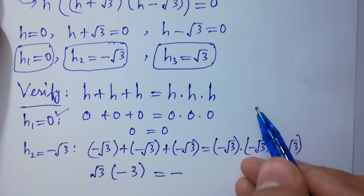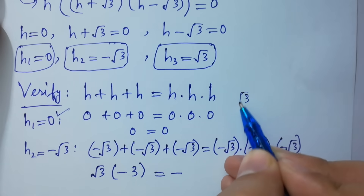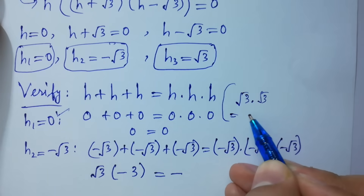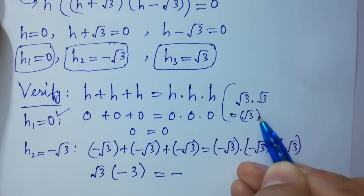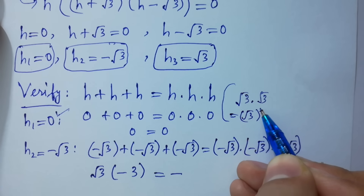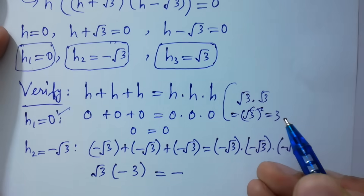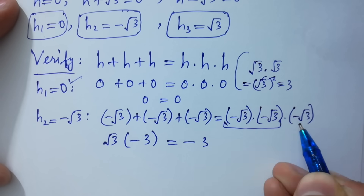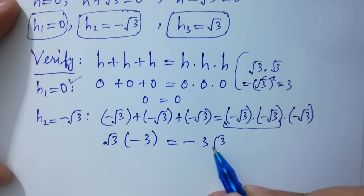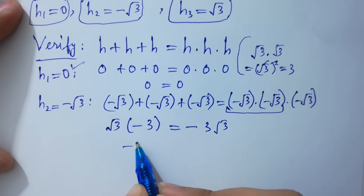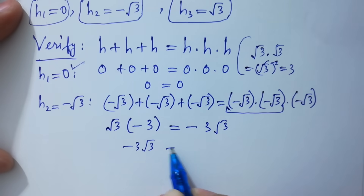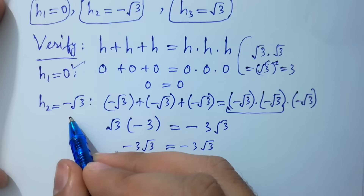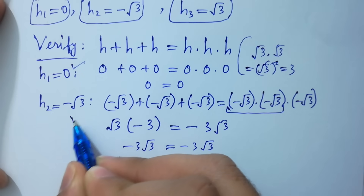On the right side, square root of 3 times square root of 3 equals 3, so we get 3 times square root of 3, but with the negative signs: minus 3 square root of 3 equal to minus 3 square root of 3. This shows that h₂ equal to minus square root of 3 is also correct.